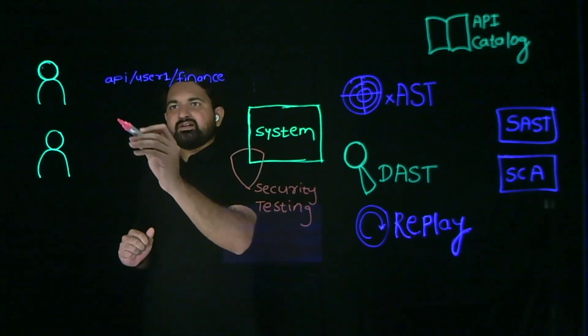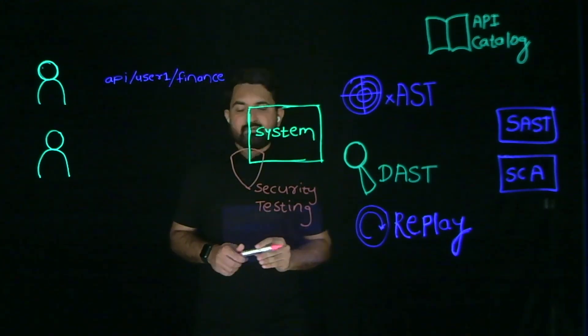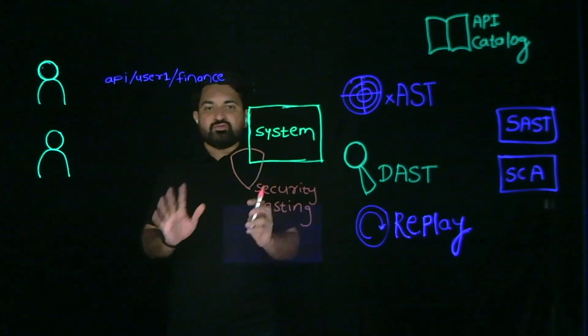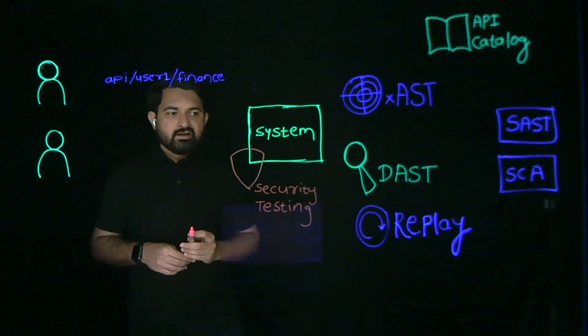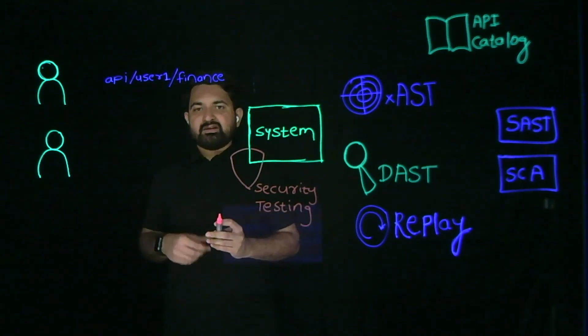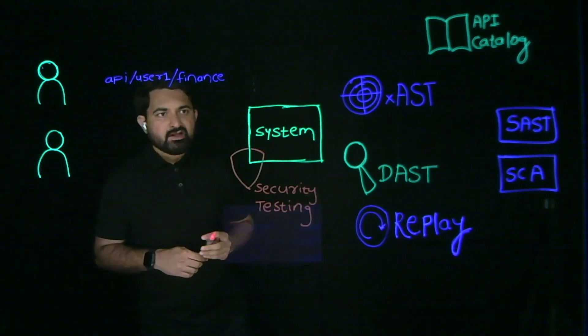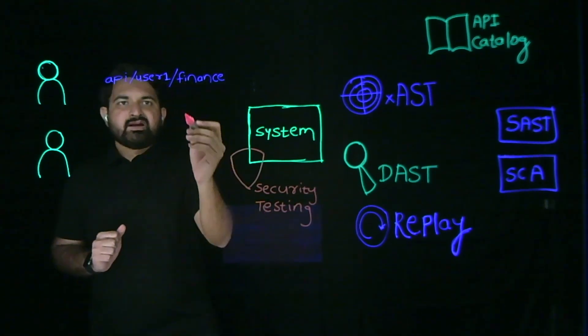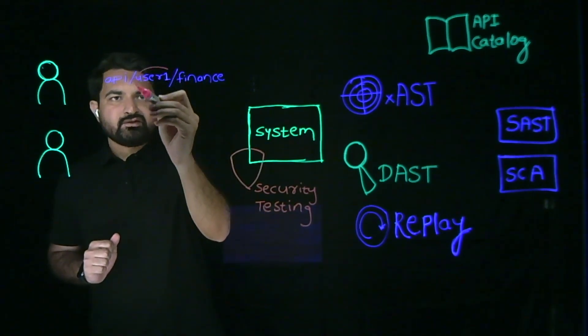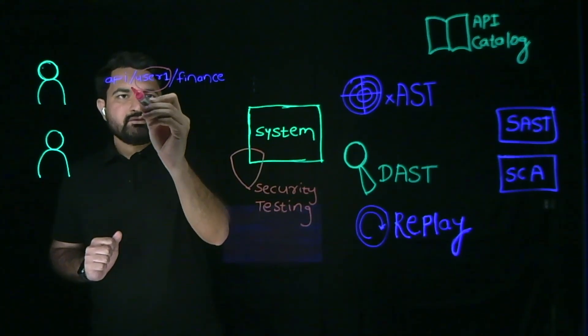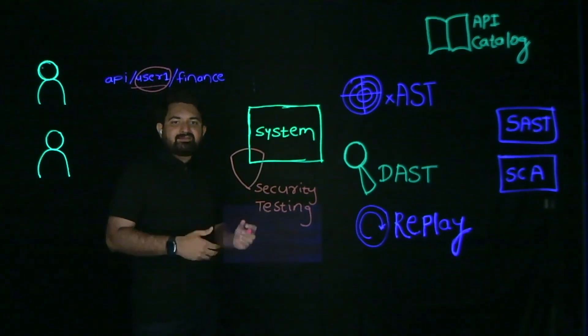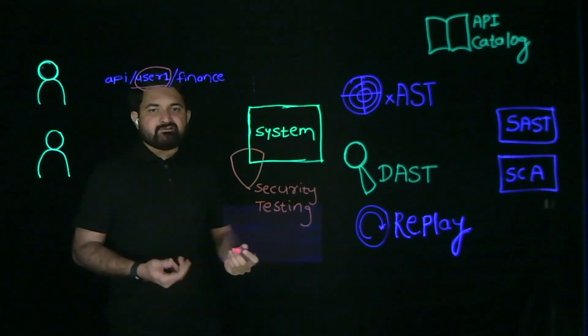For instance, let's consider BOLA which is Broken Object Level Authorization and it's one of the most common vulnerabilities. It's also API number one in the OWASP API top 10. In BOLA, an attacker modifies or manipulates the identifier, which in this case is user1, to access the information for different users.